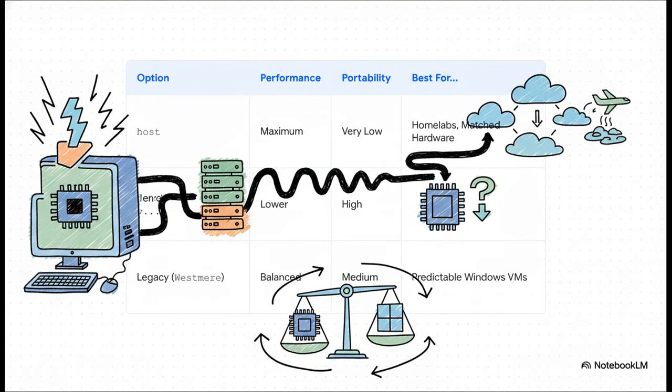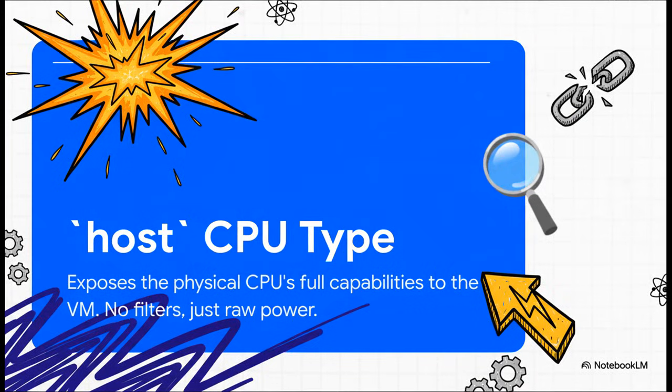This table really lays out the trade-offs perfectly. On one end of the spectrum you've got host — maximum performance, but you pretty much give up portability. On the complete other end, you have the generic types, which flip that script entirely: super high portability, but you take a performance hit. And then, sitting right there in the middle, you have the legacy models, trying to give you a little bit of both.